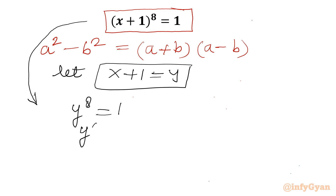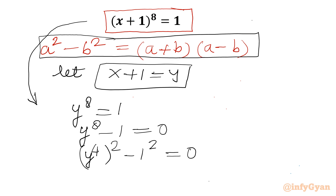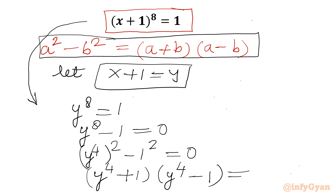Or equivalently, y^8 - 1 = 0. Now I can write y^8 as (y^4)² - 1² = 0. Applying the difference of squares identity, this becomes (y^4 + 1)(y^4 - 1) = 0.